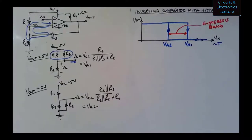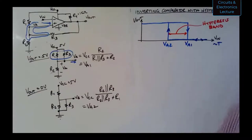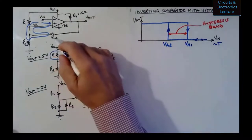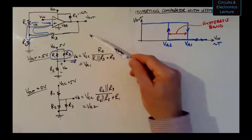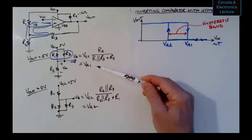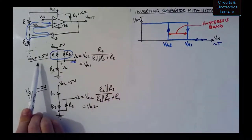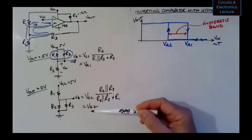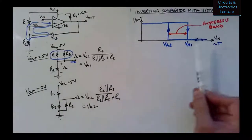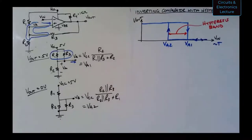We're going to finish up comparators today. We left off talking about the inverting comparator with hysteresis. This circuit has a resistor R3 that causes the threshold voltage VA to change based on the state of the output. Last class we derived what VA is when VOUT is five volts and when VOUT is zero volts. We determined that the threshold changes based on the output voltage — you want two different thresholds so switching happens at different input voltages.